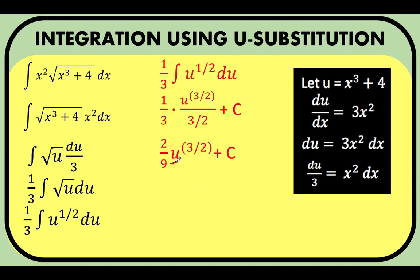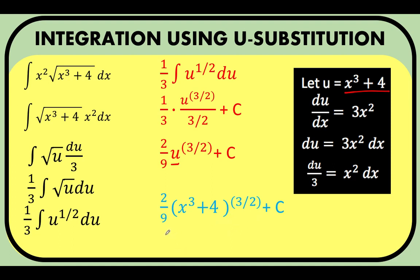Now we unsubstitute the value of u: u is replaced by x cubed plus 4. This becomes 2 over 9 times (x cubed plus 4) raised to 3 halves plus c. This is our final answer. Or, written using radical notation, this equals 2 over 9 times the square root of (x cubed plus 4) cubed, plus c.